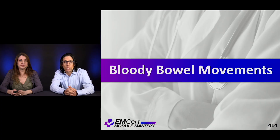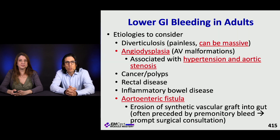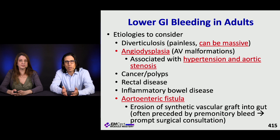We talked about blood from above. Let's talk about blood from below and talk about bloody bowel movements. So lower GI bleeding in adults. You can have diverticular bleeding. It's typically painless, but it can be massive and also really hard to find.